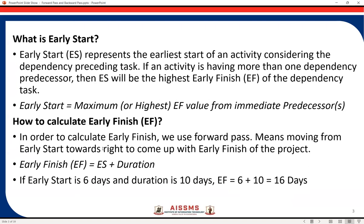Now, what is the early finish and how to calculate it? To calculate the early finish, we use the forward pass — moving from early start towards the right to come up with the early finish of the particular activity and then for the project. Early finish equals ES plus duration. So once we know the early start date plus the number of days the activity is going to take, we can find out the early finish. For example, if early start is day 6 and duration is 10 days, then early finish is 6 plus 10 equals 16 days — this activity can be finished at earliest by day 16.